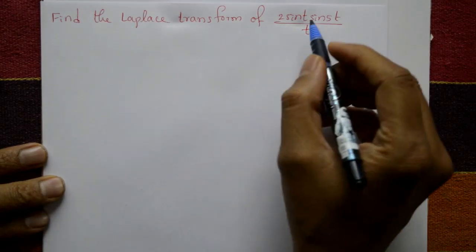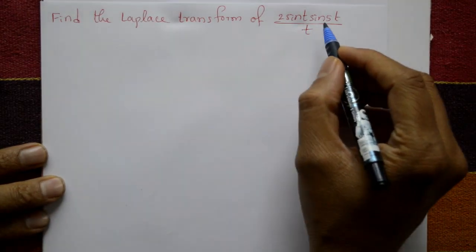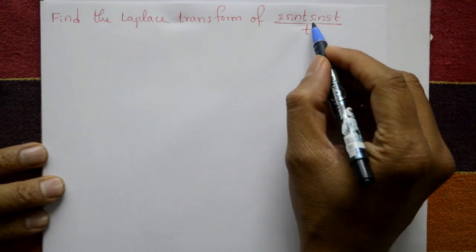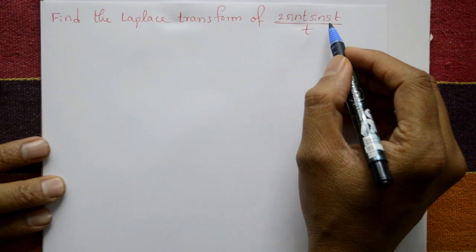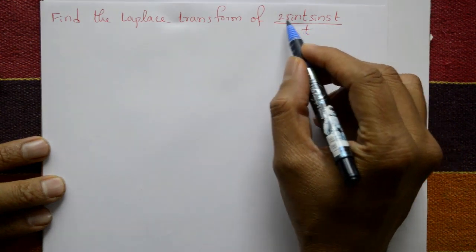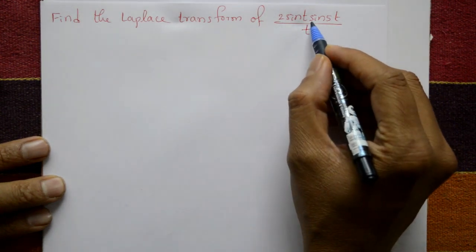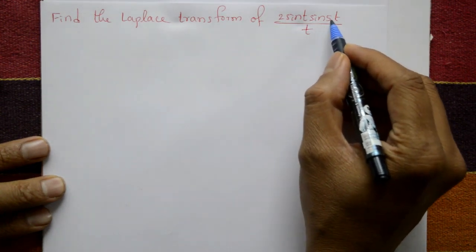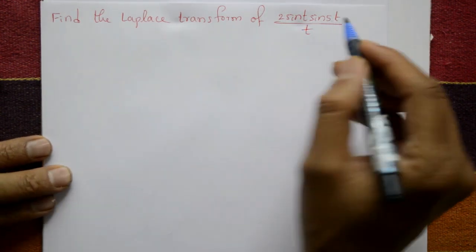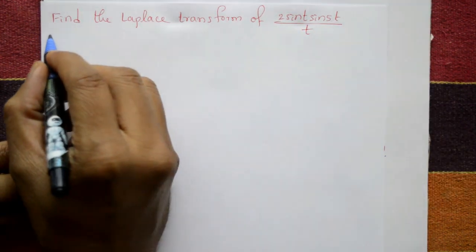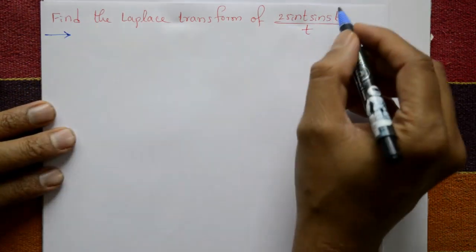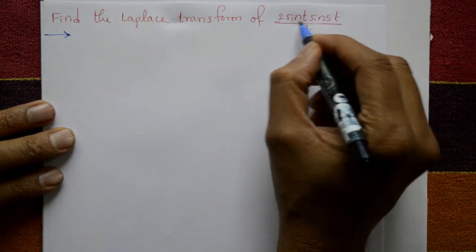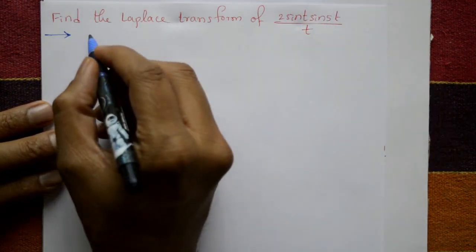Find the Laplace transform of 2 sin(t) into sin(5t) divided by t. For the solution, first take only the numerator part.